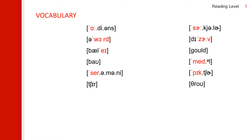First, let us practice some vocabulary. First one: audience. Audience has three syllables, accent on the first syllable. Audience.